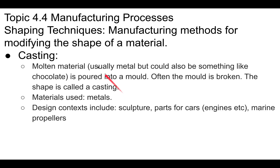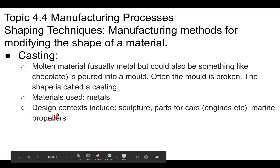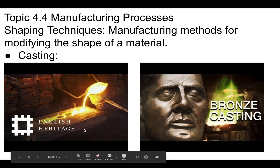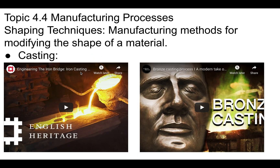The next shaping technique is casting. When we cast something, we're pouring molten material — usually metal, but also things like chocolate — into a mold. The mold is often broken afterward, and what's left is called a casting. Things like sculptures, car engine parts, and propellers on ships are probably made by casting. Here is casting in iron — cast iron. This is an old technique using sand: you push wood into sand and pour molten iron in, giving you cast iron.